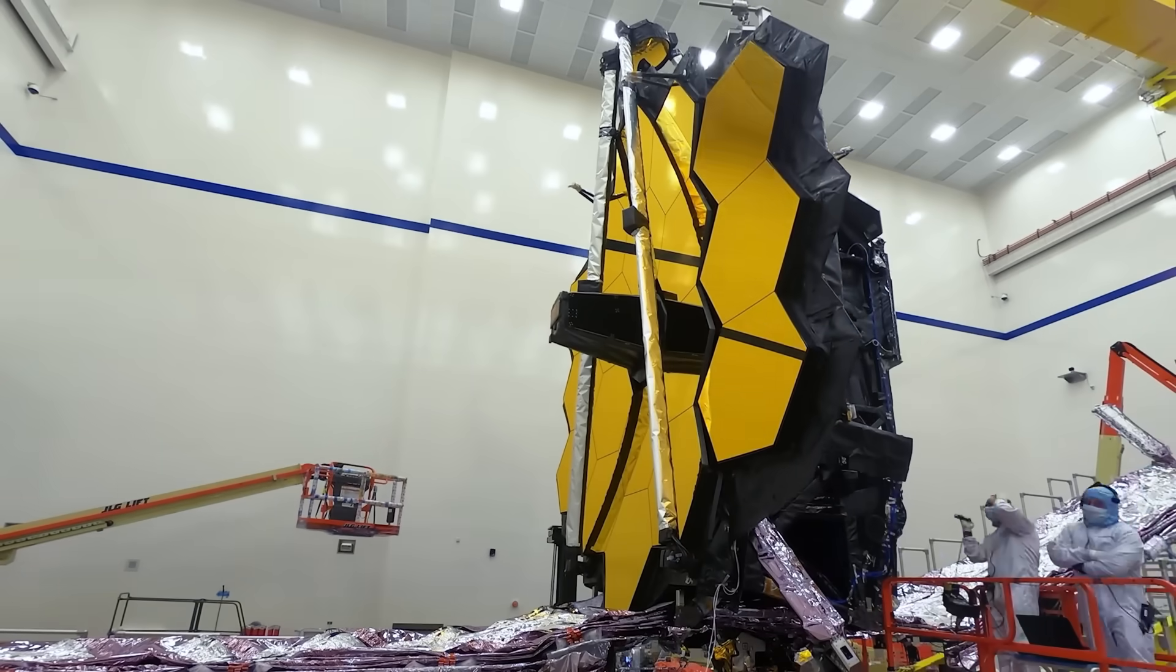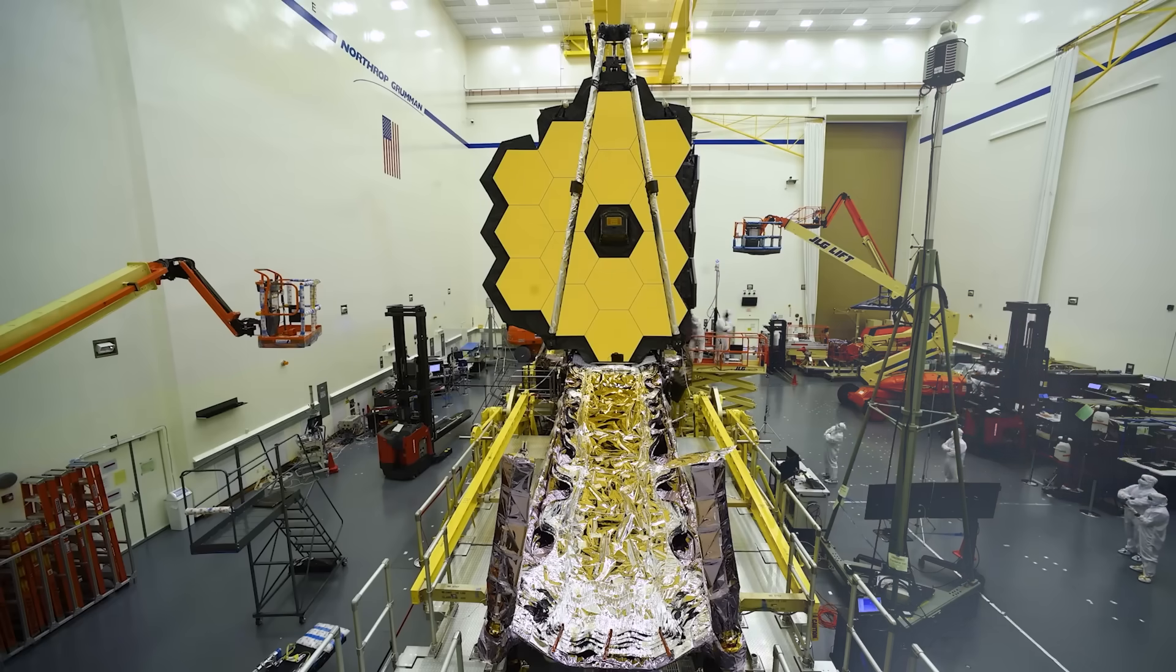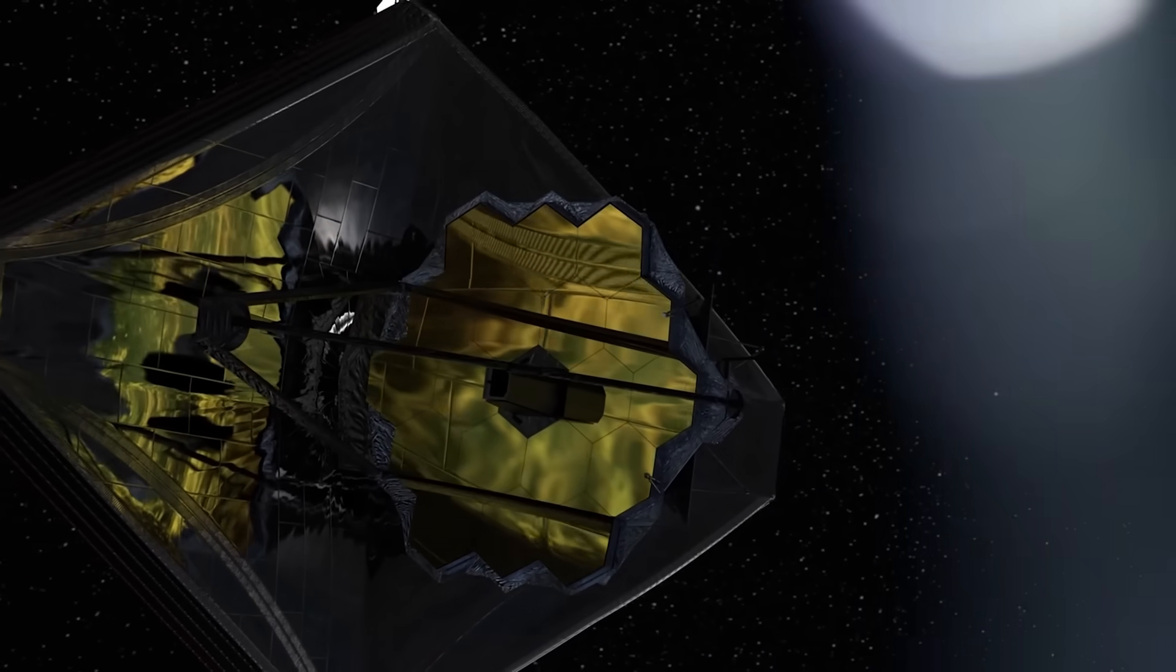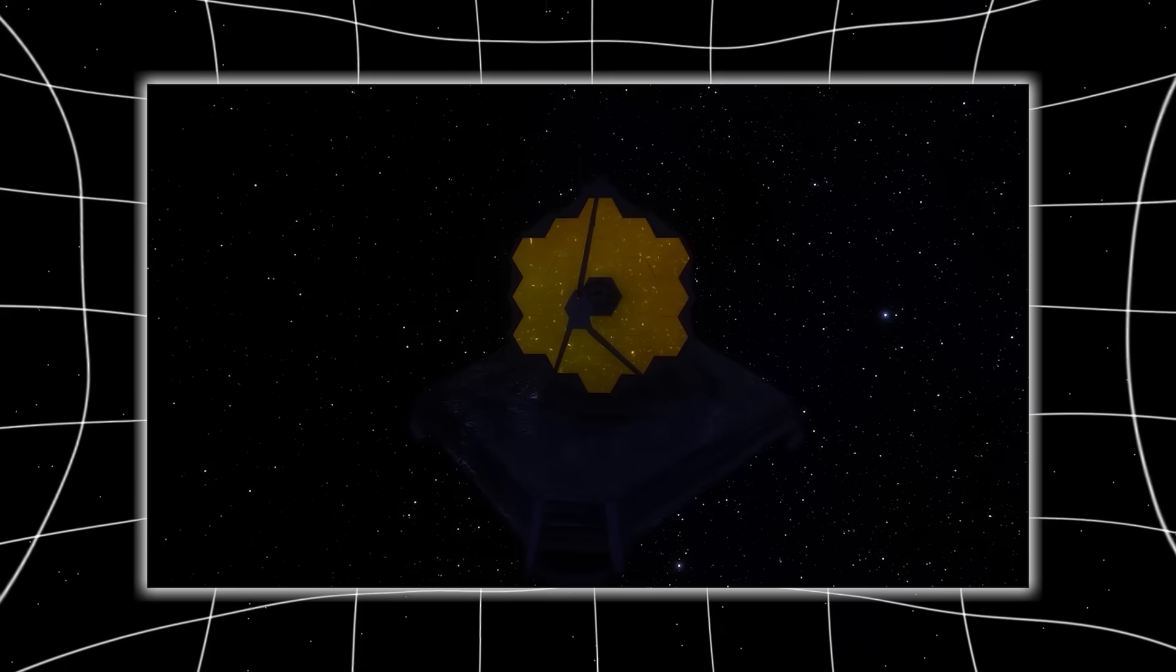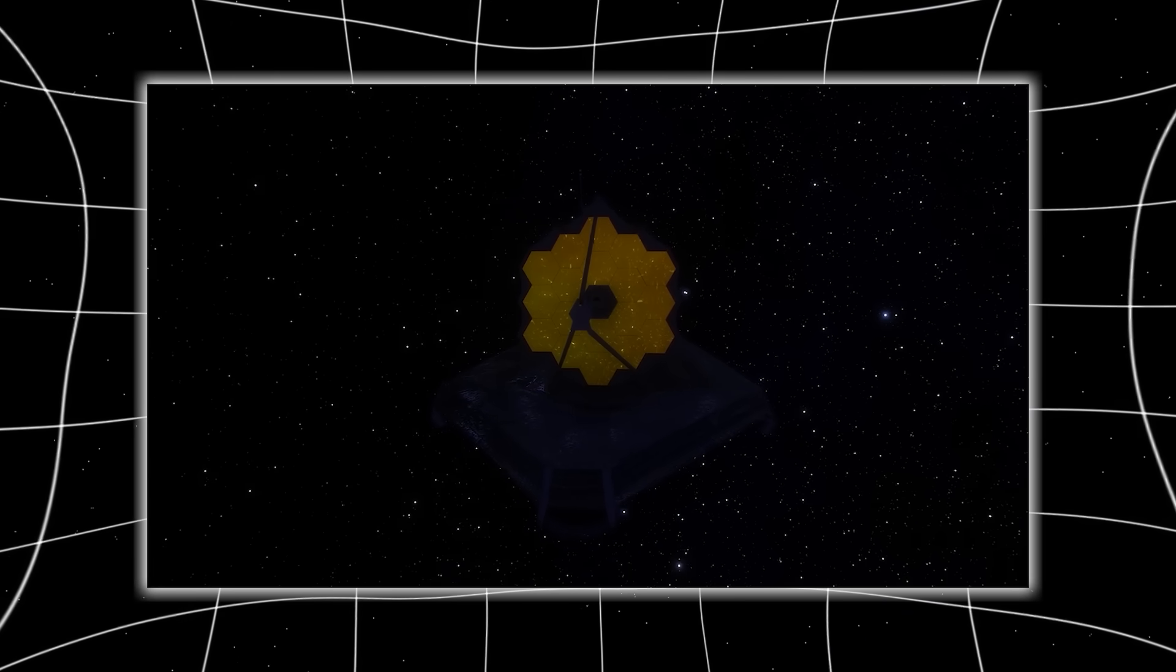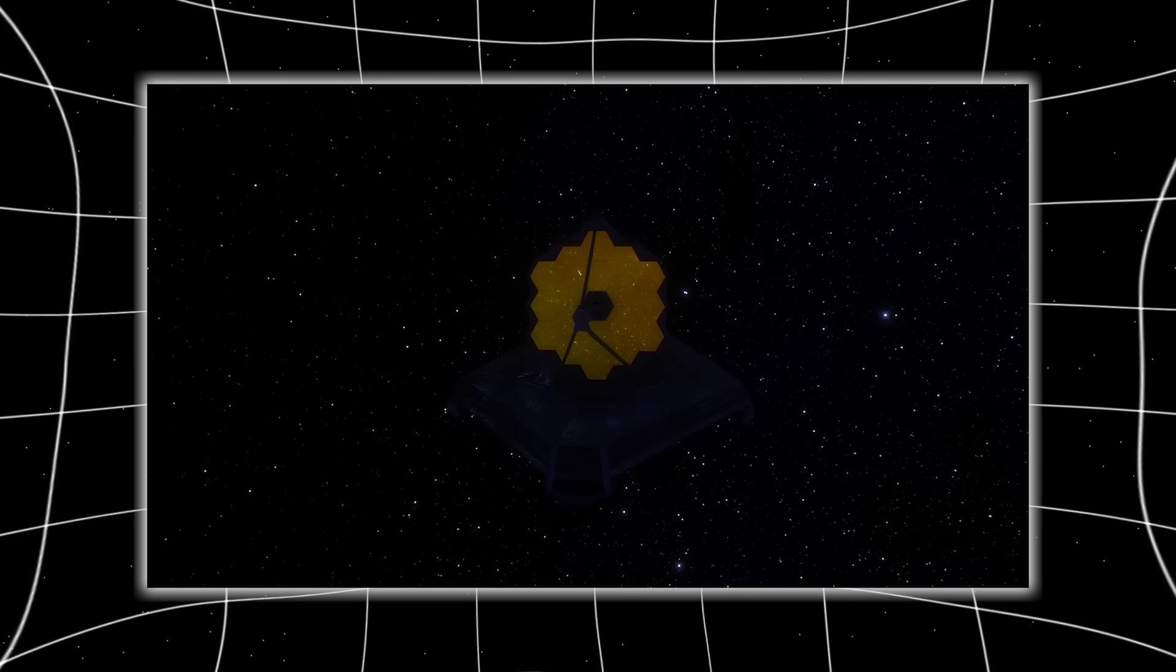But when the James Webb Space Telescope pointed its ultra-sensitive eye into the most ancient corner of the cosmos, it didn't find confirmation. It didn't find comfort. It found a contradiction so massive, so clear, and so undeniable that the very equations we've trusted for over a century now tremble at the edges.